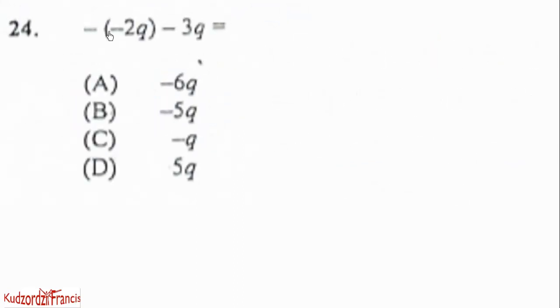24. We have this negative negative of 2q minus 3q. So negative negative gives us positive. That will give you 2q. This will give you positive 2q, then subtract 3q to get 2 minus 3 which is negative 1 times q, and it will give you negative q.